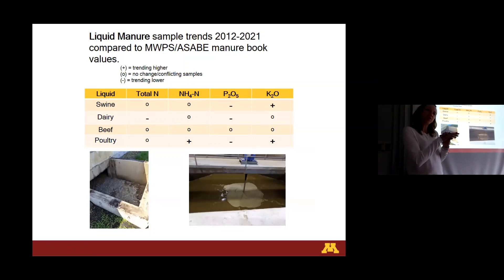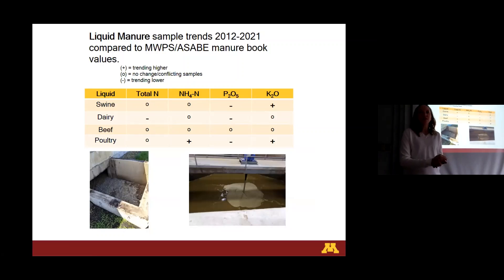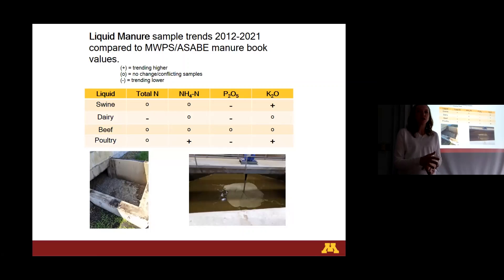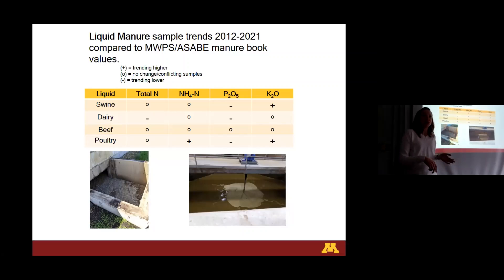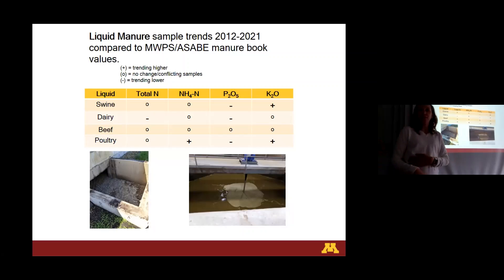Looking at the liquid comparison, we assessed whether values were trending higher or lower from those book values, or if there was just no change or conflicting samples. For the total nitrogen in liquid samples, I really couldn't see a big trend shift besides dairy manure seeming lower in total, and poultry was a little higher in ammonium. One trend that seemed consistent across the board was that phosphorus, P2O5, was trending lower in swine, dairy, and poultry. I've been more familiar with swine manure from previous work, and a lot of times our phosphorus level was half of what the book value was, mainly due to the dietary inclusion of phytase, which made it more able for the pig to use the phosphorus in their diet and not excrete as much. And potassium seemed to be a little more increased in the swine and poultry area.